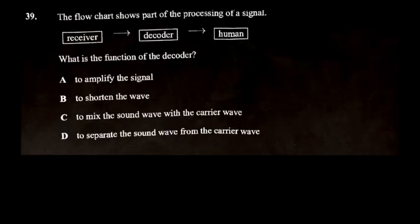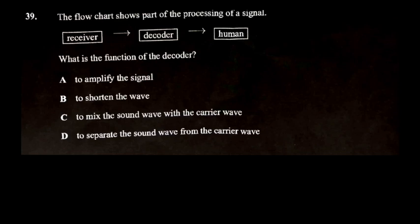The next part says the flowchart shows part of the processing of a signal. We have receiver going to decoder and then to human. You're asked what is the function of the decoder. The decoder decodes the information being transmitted — signals that machines can understand but are not audible to a person. The decoder gives an output that's intelligible to the human.